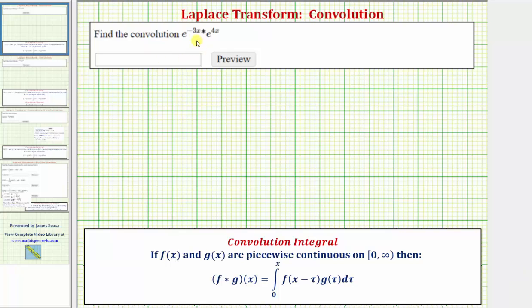Here we're asked to find the convolution of e raised to the power of negative 3x and e raised to the power of 4x.